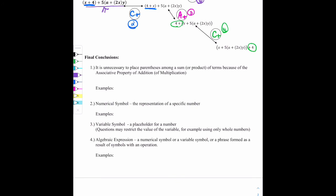Okay, so in conclusion, there's a couple points we want to talk about and make here at the very end. Number one, it is unnecessary to place parentheses among a sum or product of terms because of the associative property of addition or multiplication. So just some examples. If I look at the expression (a+b)+(c+d), there's one way to write the expression. I could have a+(b+c)+d. I could also have a+b+(c+d). But all of those expressions, if using multiplication or addition, are going to be the exact same as just having a+b+c+d as a single expression with no parentheses.